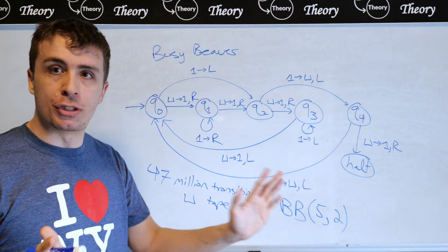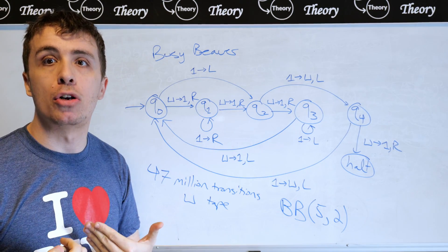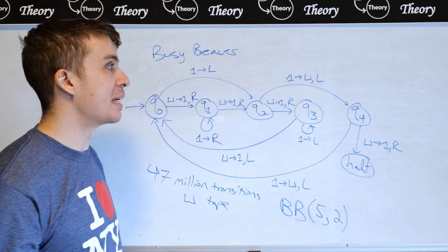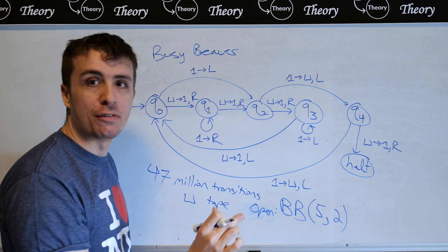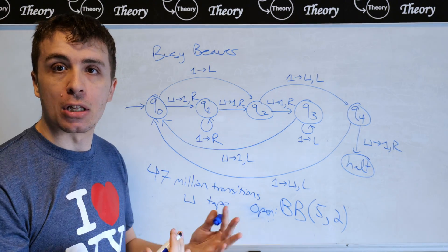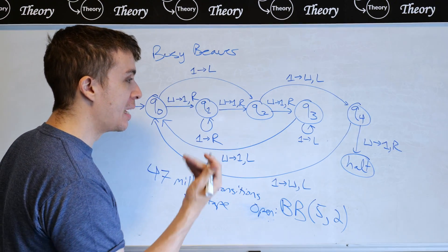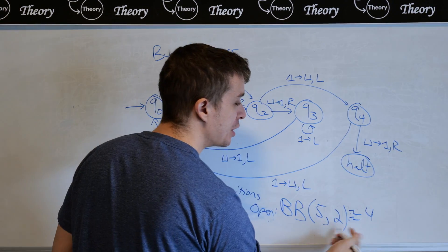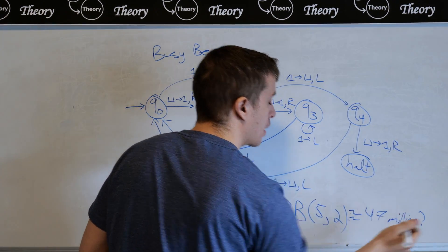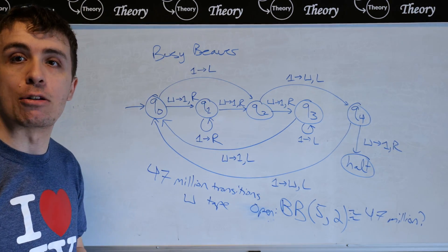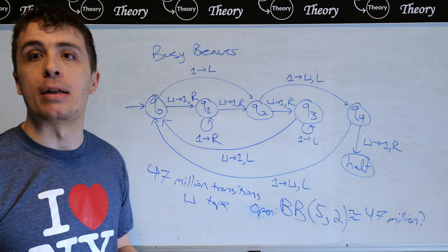Every other one either runs forever or runs in a smaller number of transitions taken. So the open question here is to determine what is the exact value of this, which is the longest number of transitions that such a machine can run for. So is this approximately 47 million? And the current conjecture is that it actually is equal to that, but it's a matter of proving that.